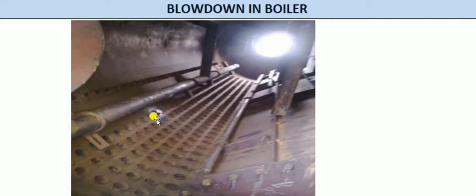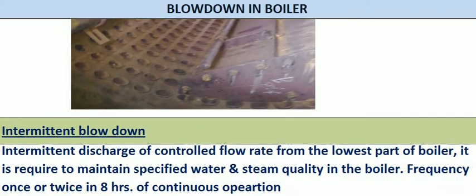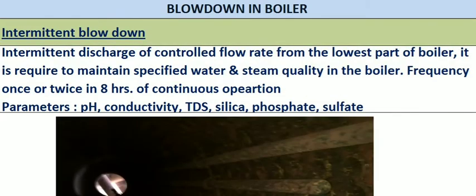There is also a plug for whenever the tubes get leaked during a hydro test — at that time we can plug it. Next is intermittent blowdown. Intermittent blowdown means that even after continuous blowdown operation, sometimes we are not able to sustain the required parameters — TDS, silica, phosphate, sulfate, or pH. When that happens, we want to bleed off a certain quantity of boiler water to sustain the water and steam quality. This is called intermittent blowdown.